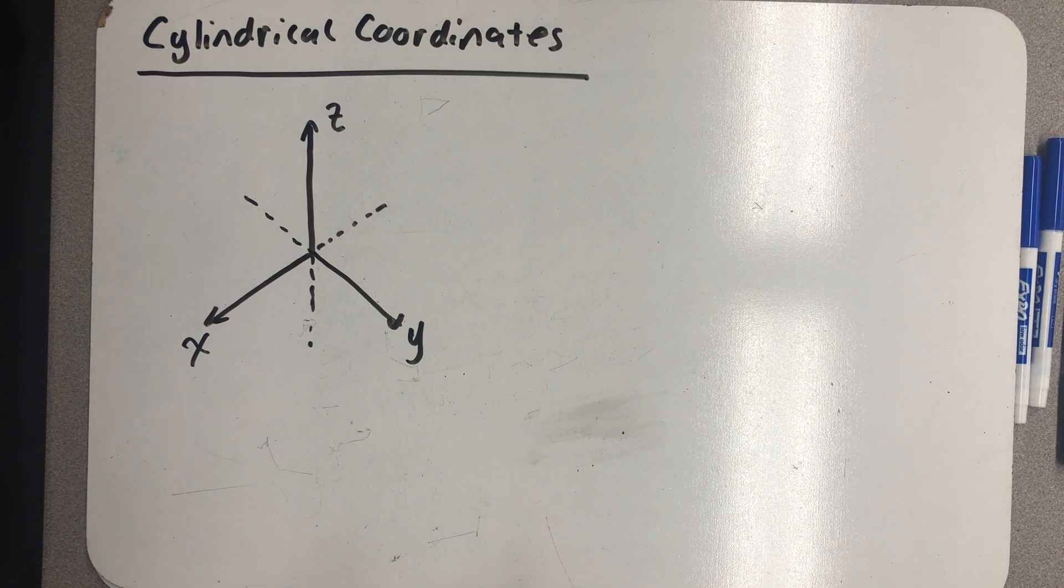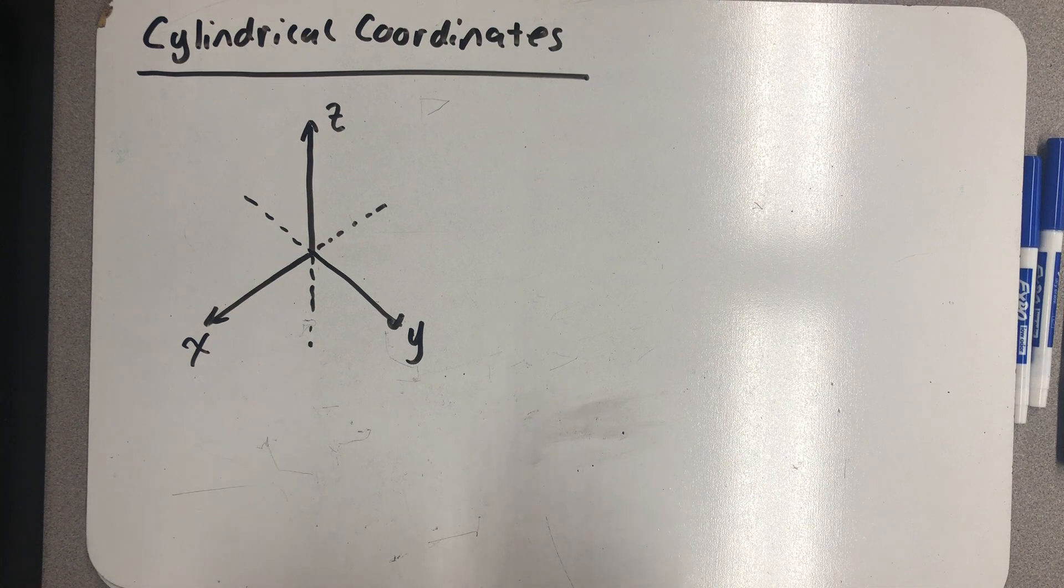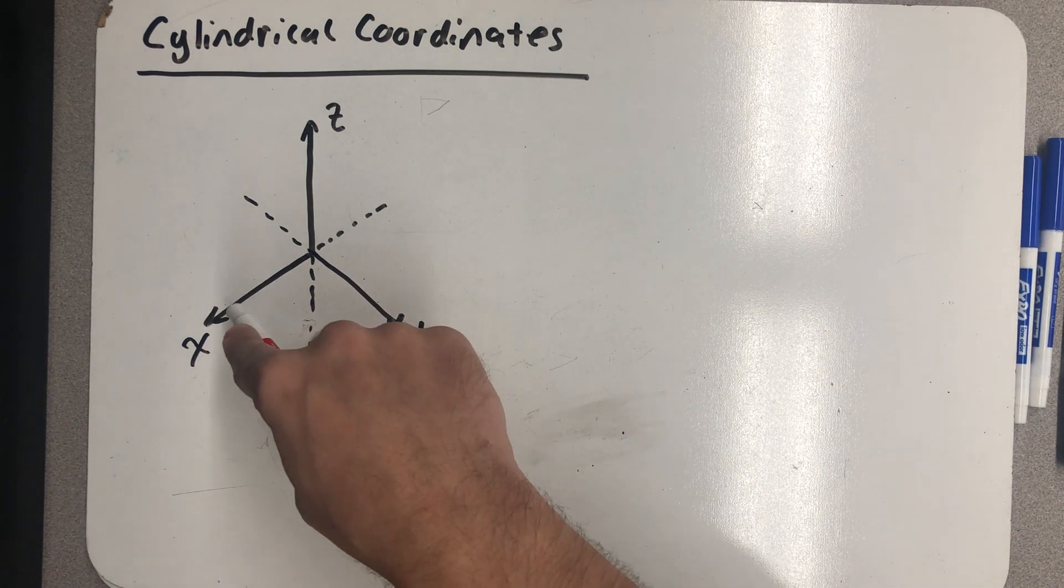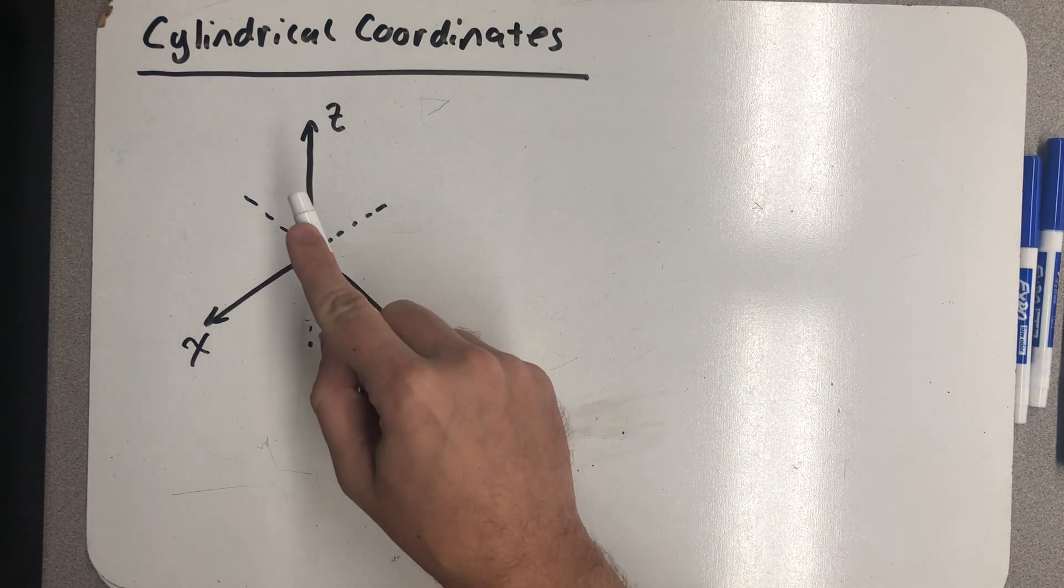I want to talk about another way of plotting points in space called cylindrical coordinates. We're used to a rectangular or Cartesian coordinate system where I give you an x, y, and a z and you go out some distance on the x axis, over on the y, and up on the z.